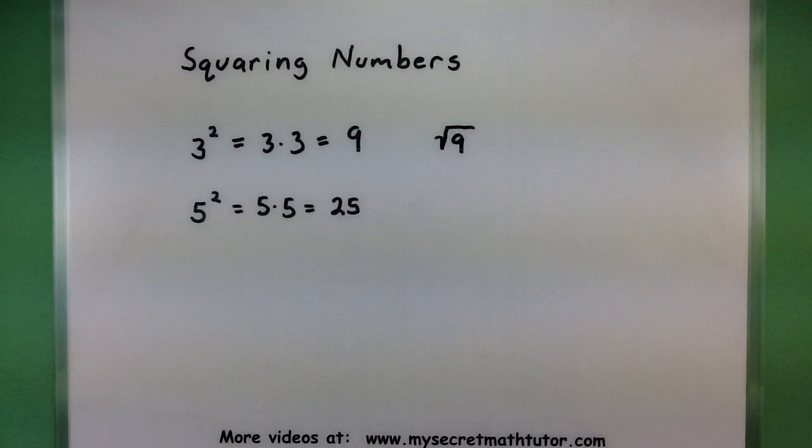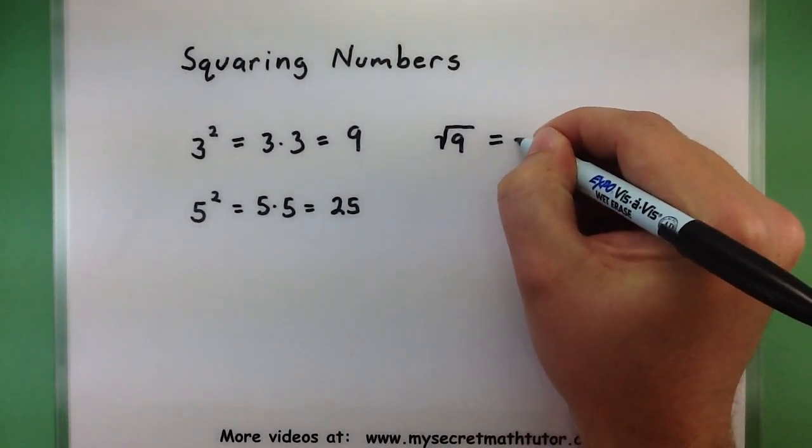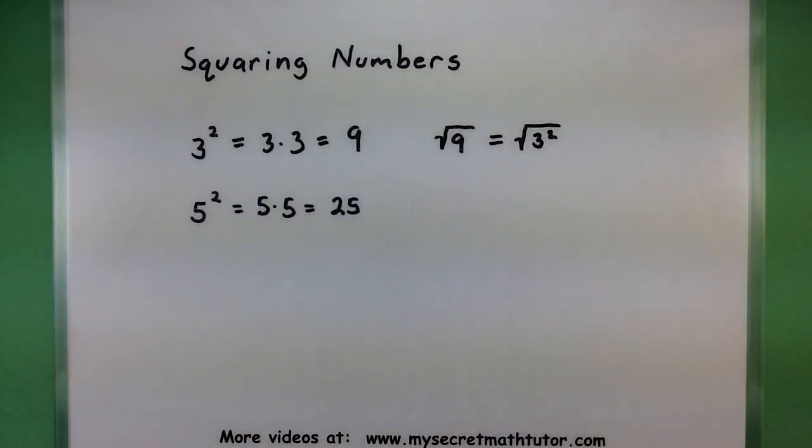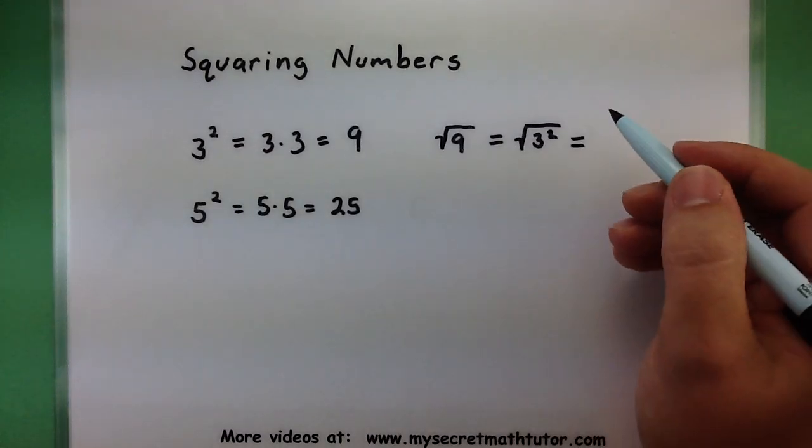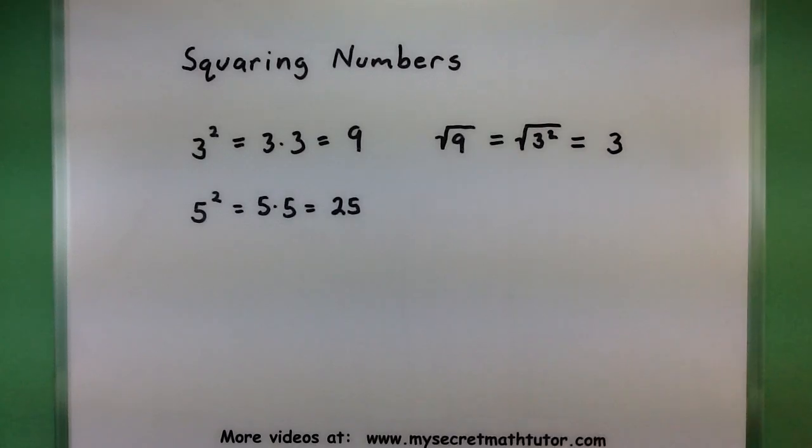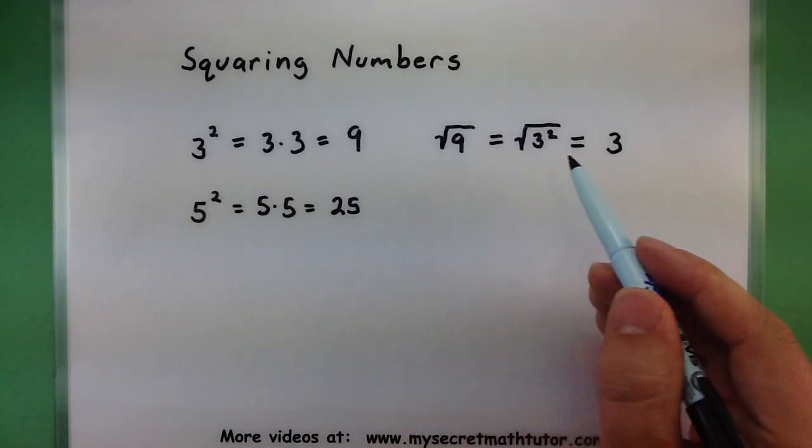So when I see something like the square root of 9, I'm thinking what multiplied by itself would essentially give me a 9? Well we already did the squaring process, so think of this as 3 squared. 9, 3 squared, same thing. Now the square and the square root will take care of each other and we'll just be left with 3. And again another way I can think of this is, well the number that multiplied by itself that would give me this 9 here is the 3.